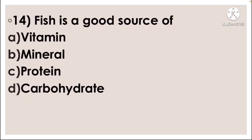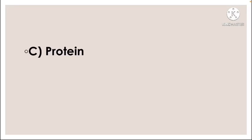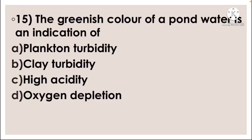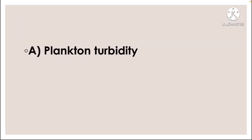Next question: Fish is a good source of — option A vitamin, option B mineral, option C protein, option D carbohydrate. Correct answer: option C, protein. Next question: The greenish color of pond water is an indication of — option A plankton turbidity, option B clay turbidity, option C high acidity, option D oxygen depletion. Correct answer: option A, plankton turbidity.